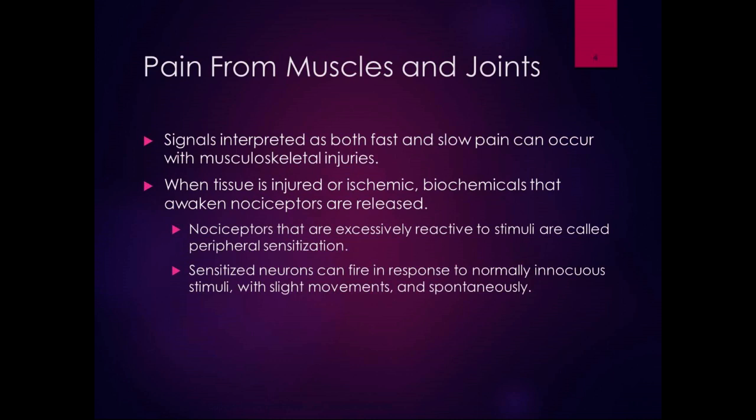Signals from musculoskeletal injuries can be interpreted as both fast and slow pain. When the tissue is injured or ischemic — deprived of blood — biochemicals that awaken the nociceptors are released. Some of those nociceptors are chemoreceptors that are sensitive to those chemicals released by cells. Nociceptors that are sensitized are excessively reactive to stimuli, and that's called peripheral sensitization.